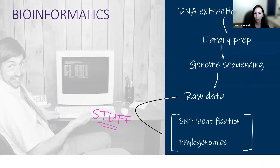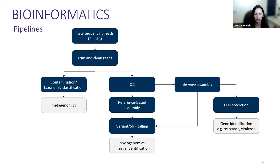Where does bioinformatics come in? After DNA extraction, library prep, and genome sequencing, we get raw read data. The bioinformatics processes that data to produce SNP identification and phylogenomics — those phylogenetic trees everyone has been seeing with COVID. Depending on your goal — metagenomics sampling all organisms in a sample, or isolate-based sequencing as we do for TB with reference-based assembly — you can run different workflows to identify lineage or antimicrobial resistance genes.